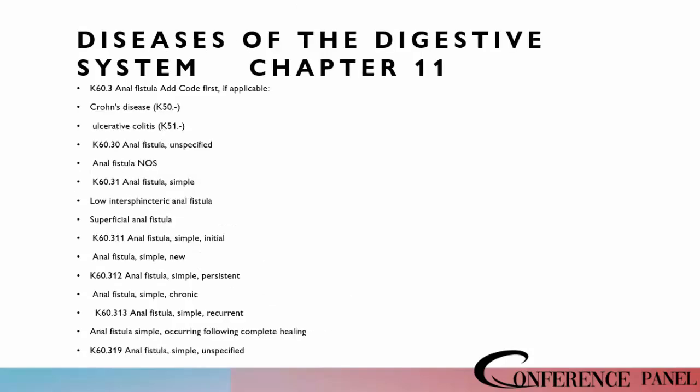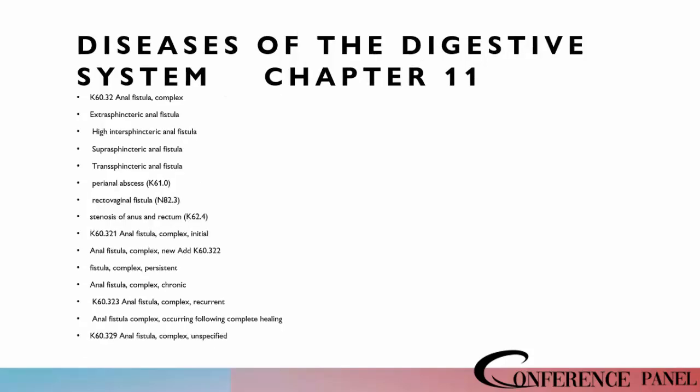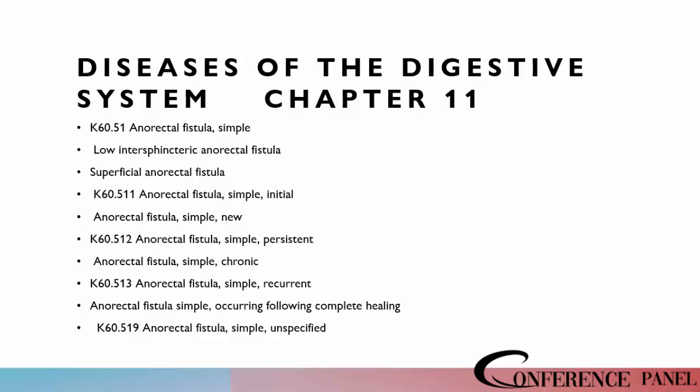In chapter eleven, diseases of the digestive system, we've got new codes in this category. More in the anal fistula category — is it complex? Still in the digestive system, we've got new codes for anorectal fistula — is it simple?